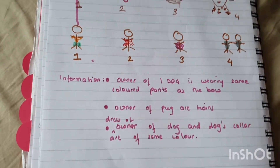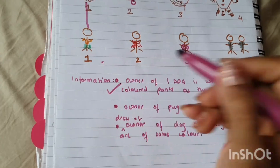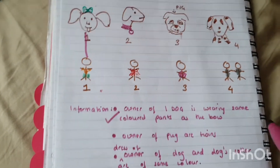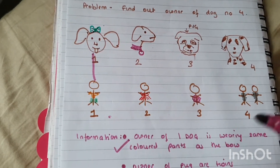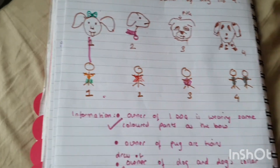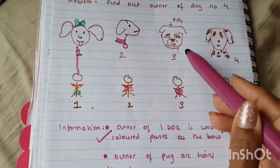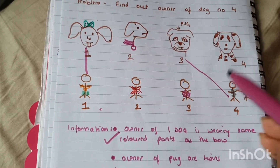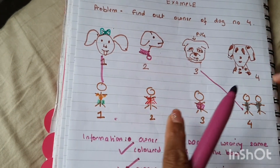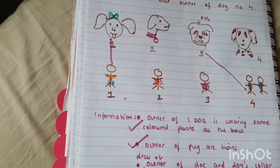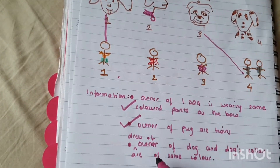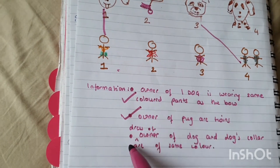Let's look at the next information. The owner of the pug are twins. So where is the pug? Okay, and who are twins over here? So we connect them, and this is done. Now it's dog number four, number three, dog number two, and human number two remaining.